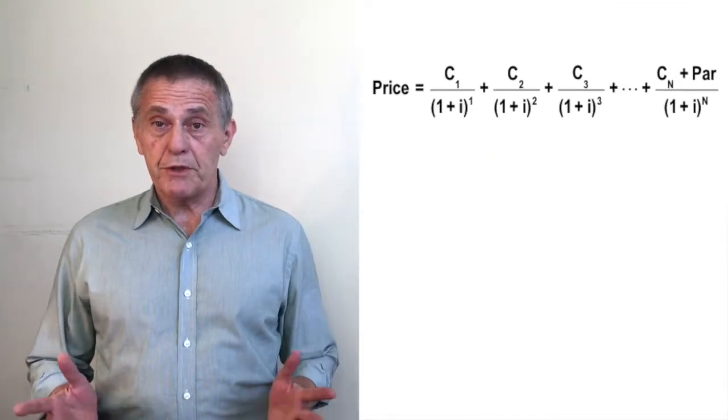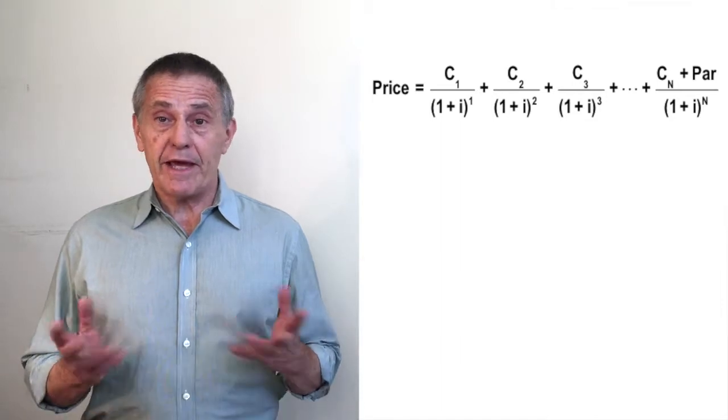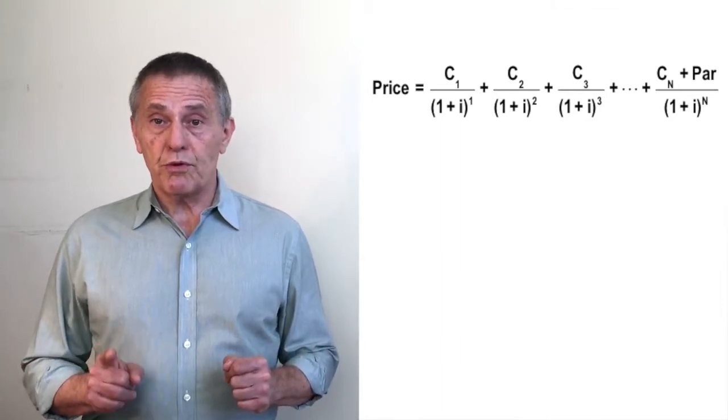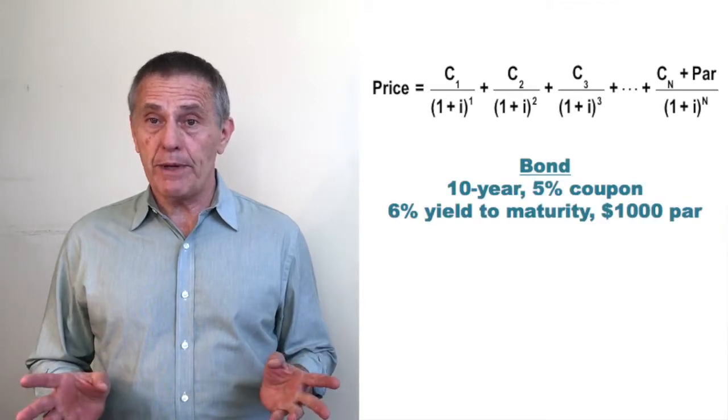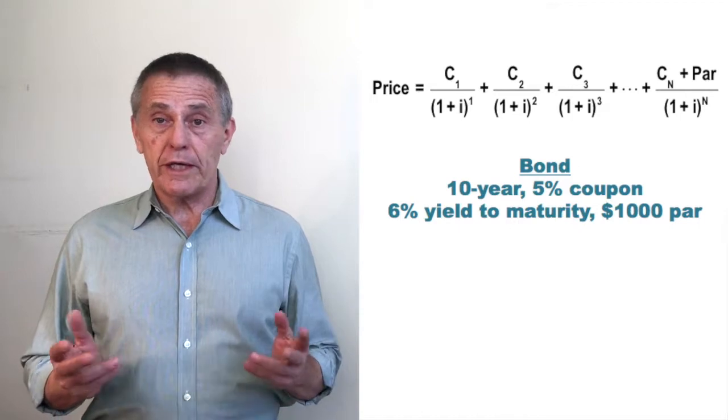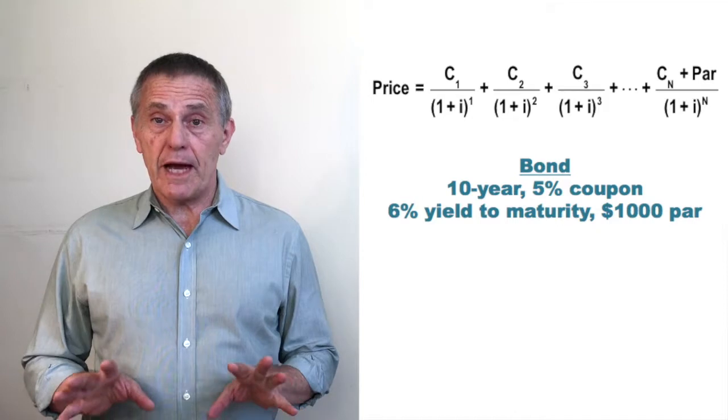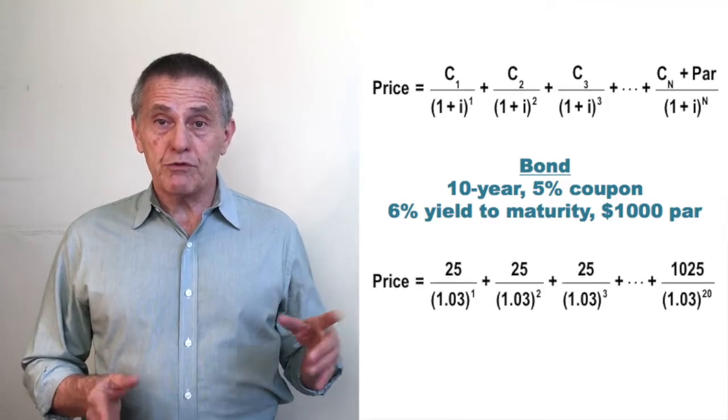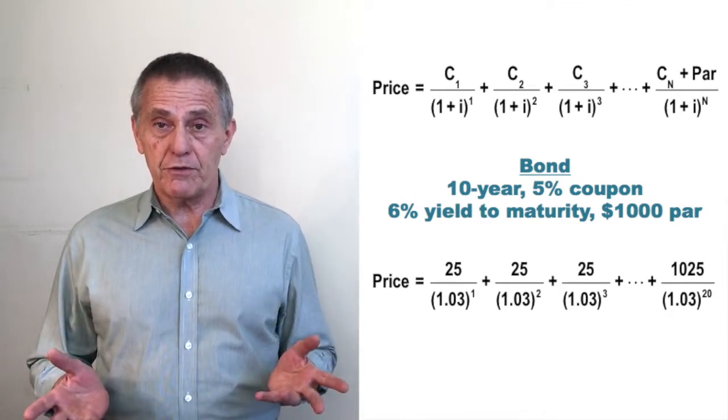Lest the discussion be a bit too abstract for people not already familiar with the process, let's calculate the price for a specific bond. Let's assume we are pricing a 10-year 5% coupon semi-annual pay bond, currently trading at a yield to maturity of 6%. Assuming $1,000 as the par value, each of the periodic coupons will be $25, 5% times 1,000 divided by 2.